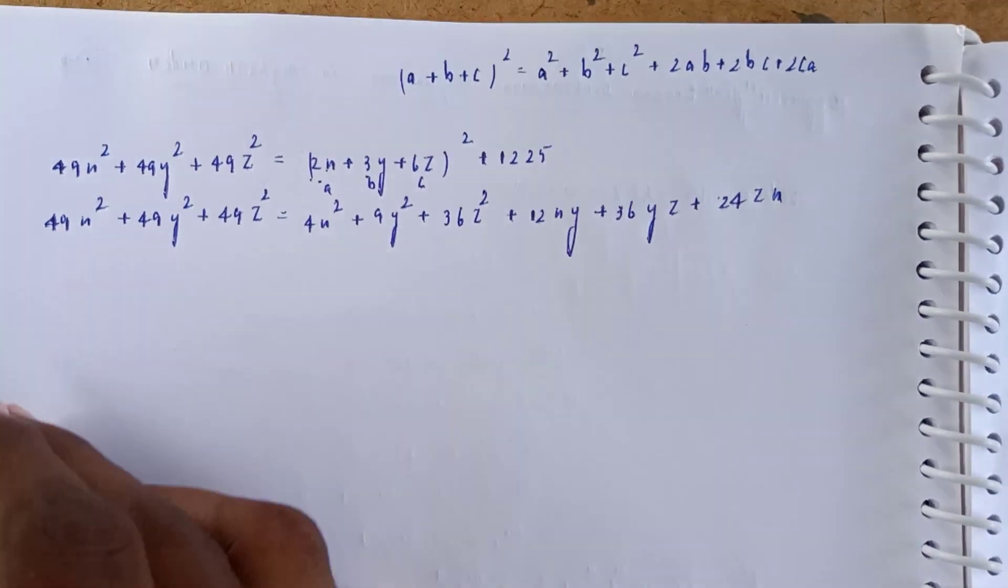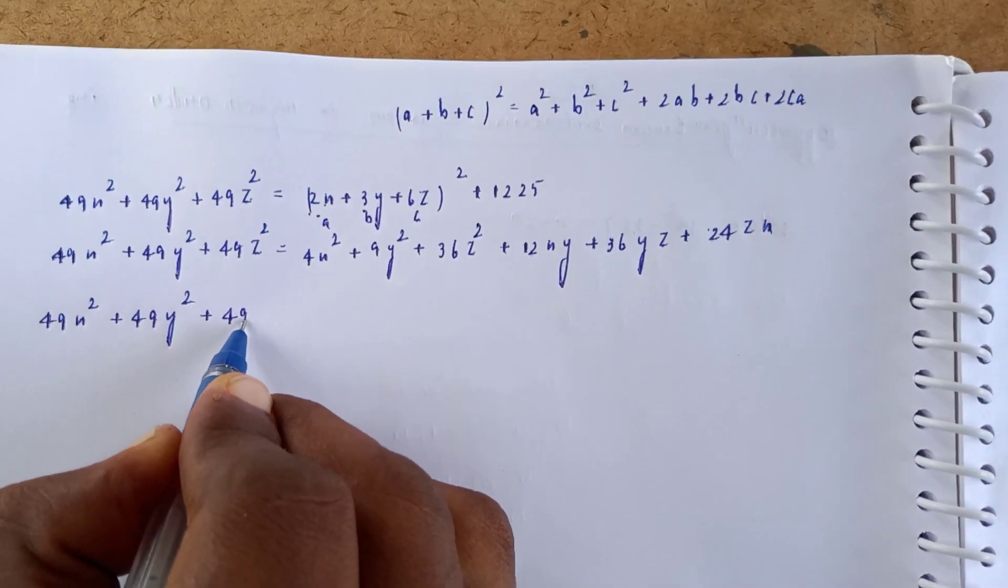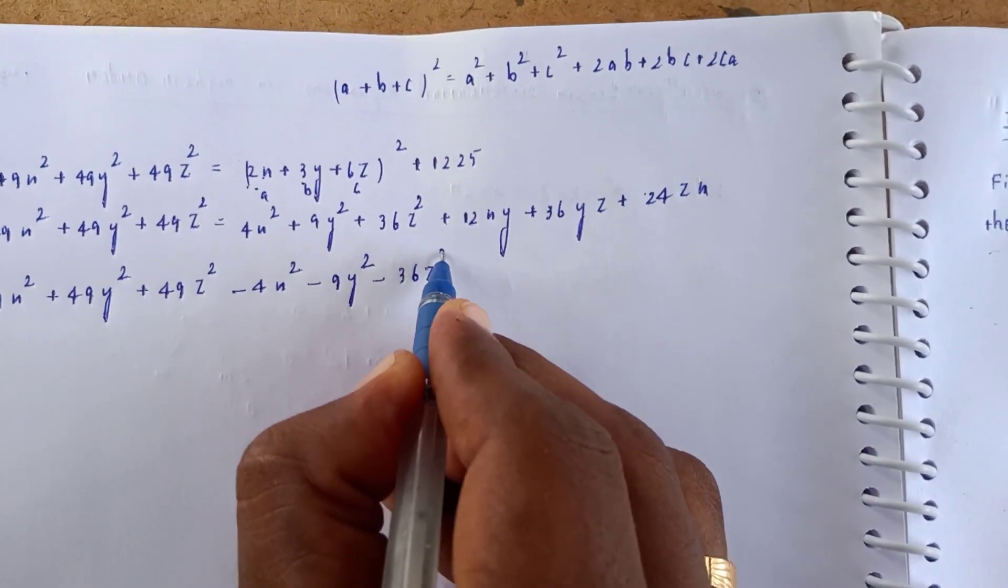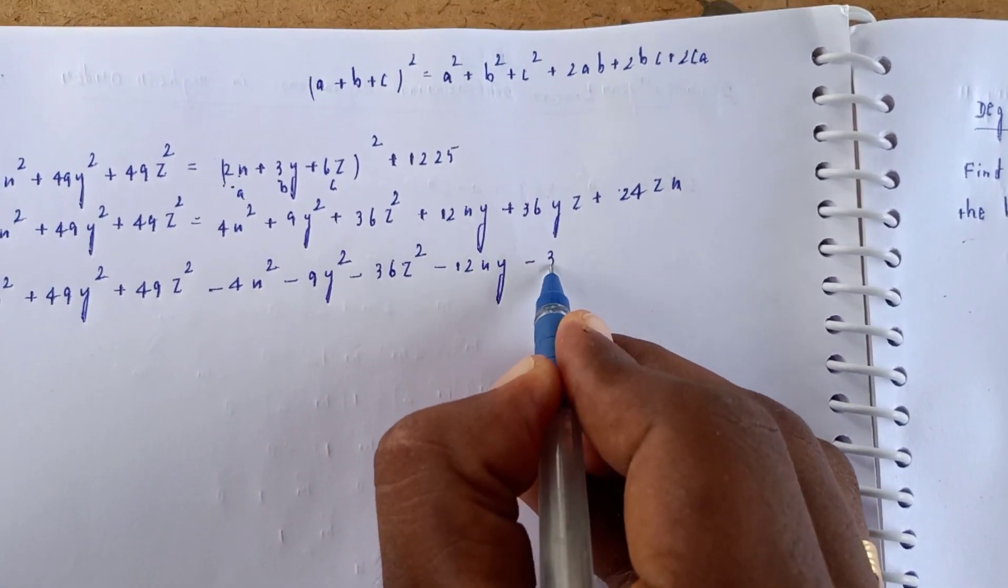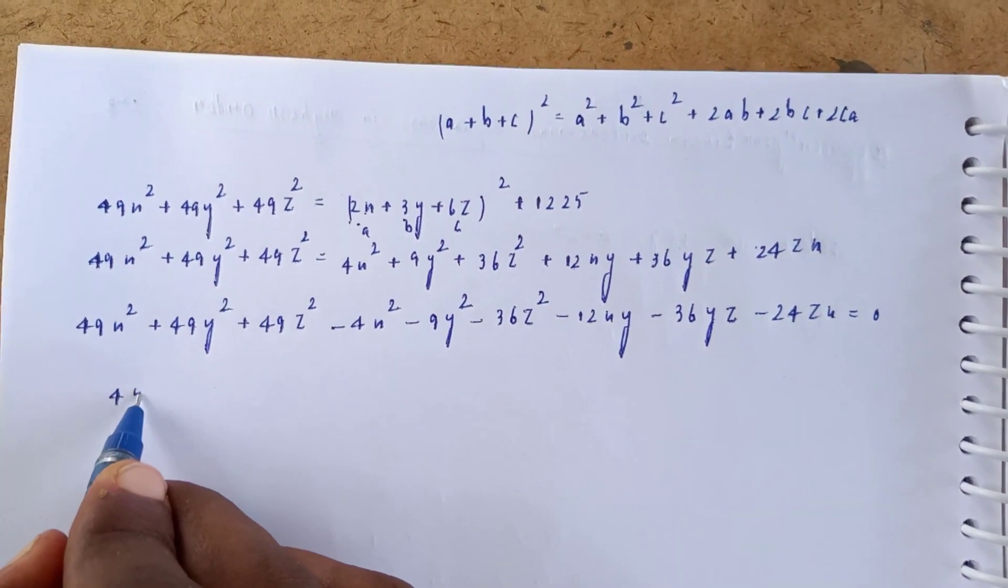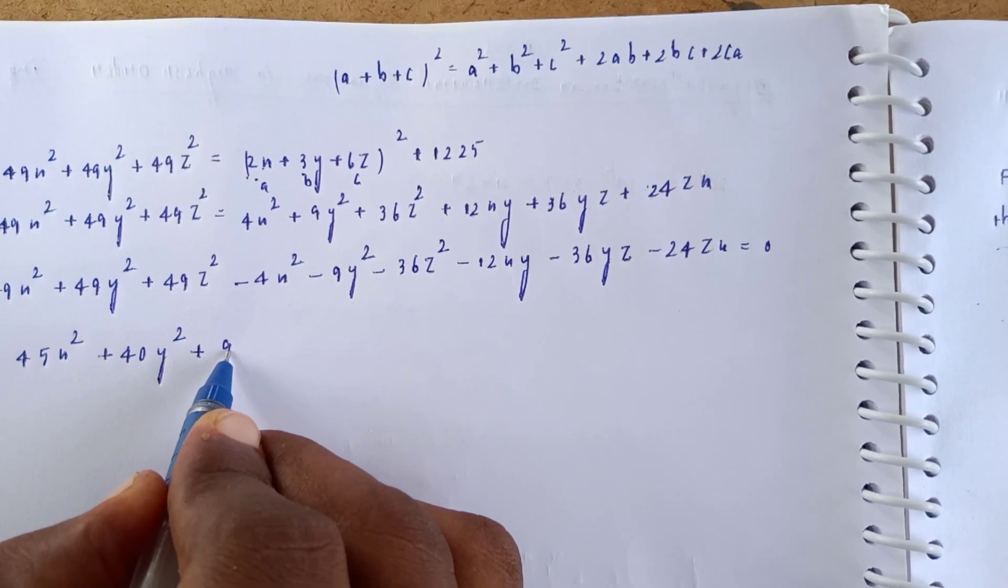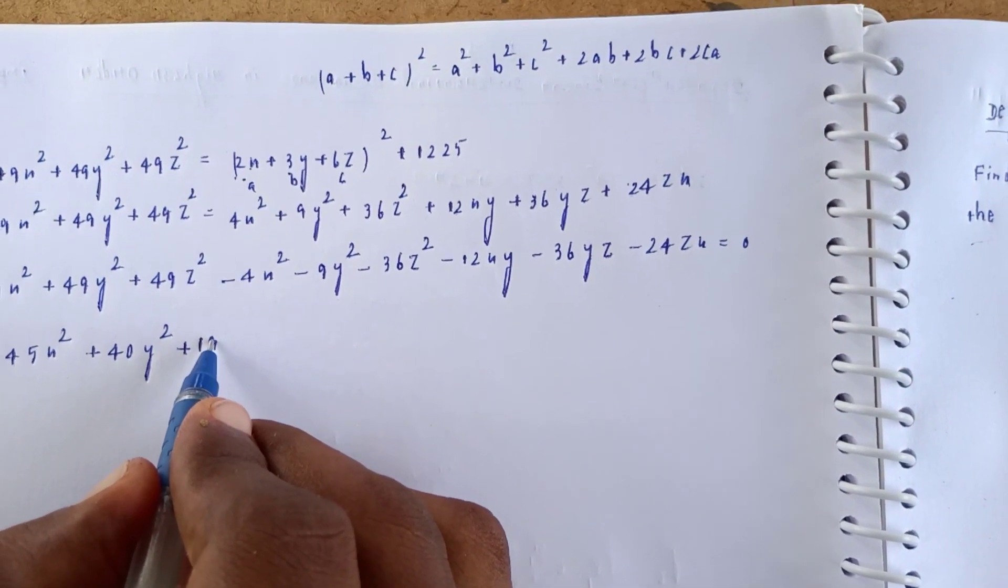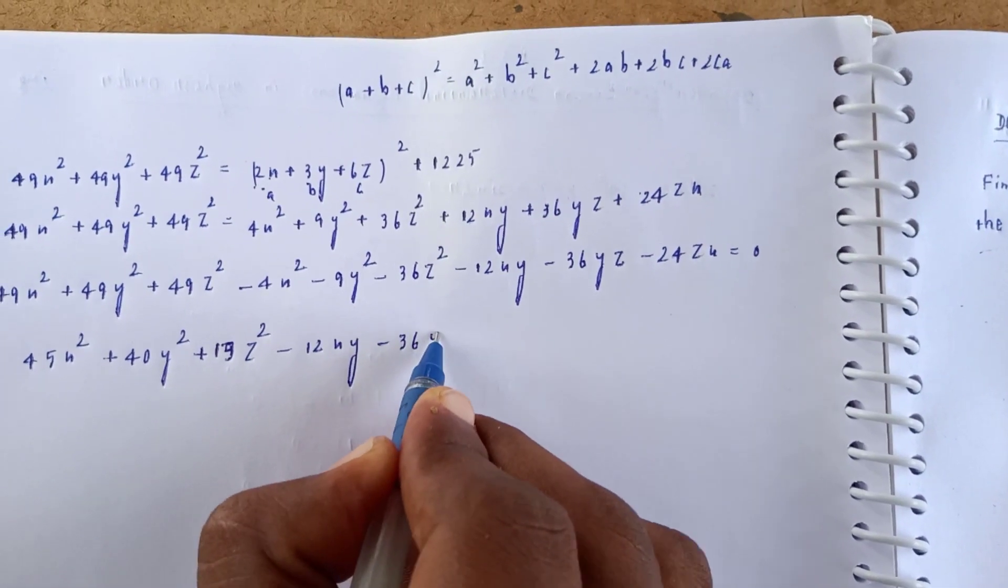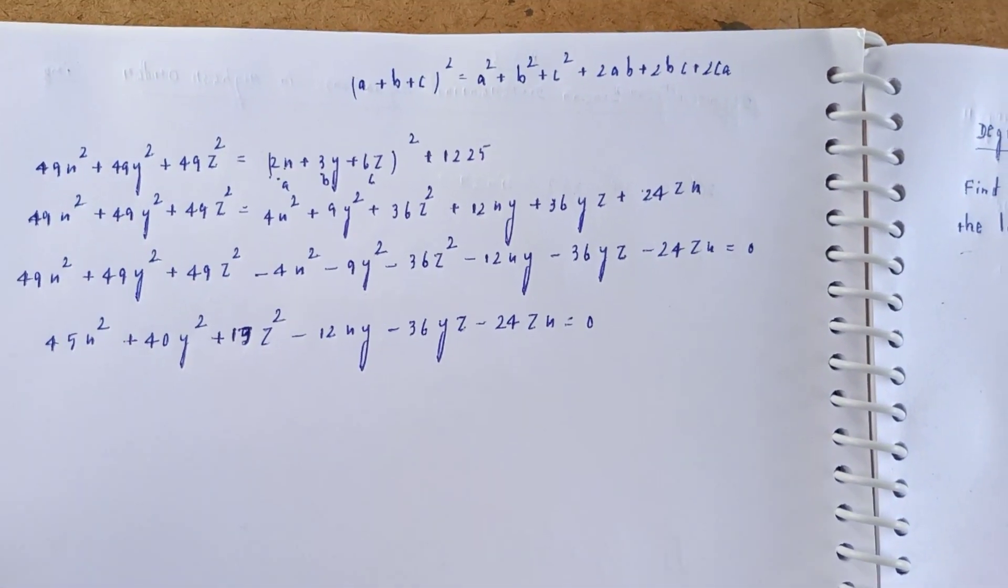49x² + 49y² + 49z² - 4x² - 9y² - 36z² - 12xy - 36yz - 24zx = 1225. Simplifying: 45x² + 40y² + 13z² - 12xy - 36yz - 24zx = 1225. This is the equation of the cylinder.